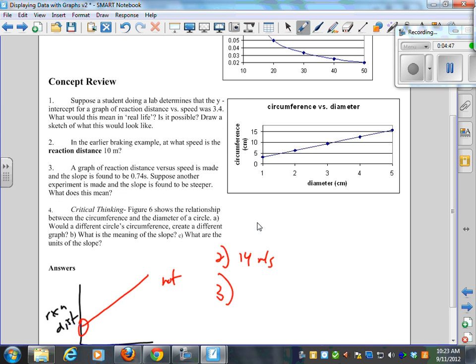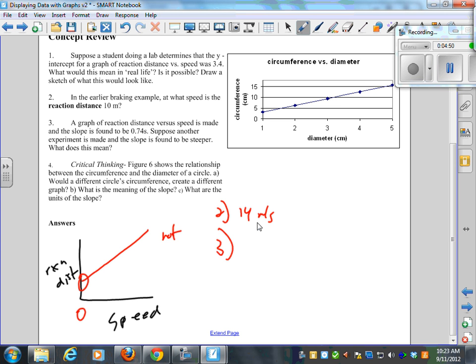Okay. So Cody's going to help us with number 3. Oh, I've got a feeling I did this one already yesterday. Maybe that was my afternoon class. Cody's going to help. A graph of reaction distance versus speed is made, and the slope is found to be 0.74. I'm going to draw a picture of that. The slope is 0.74. Suppose another experiment is made, and the slope is found to be steeper. What does this mean? I'm going to draw it for Cody, and I'm going to ask him a question. If the slope is steeper, Cody... Yeah, we did. We did this. We started. And then I think the bell went before I realized. Okay. So, Cody, you were listening yesterday. You should be good.